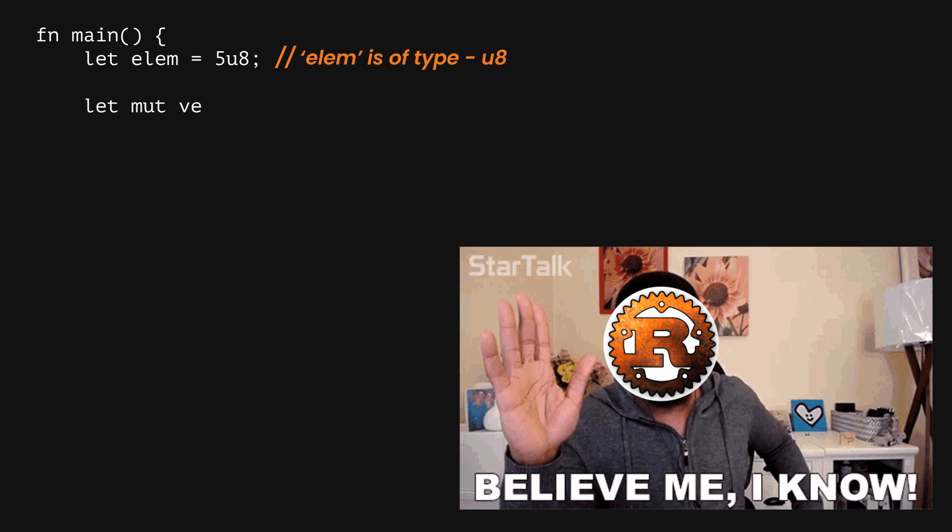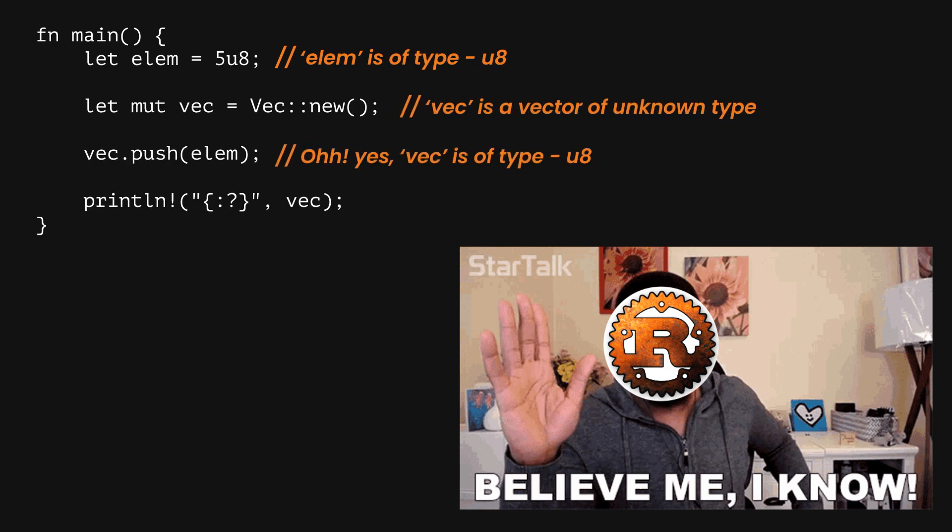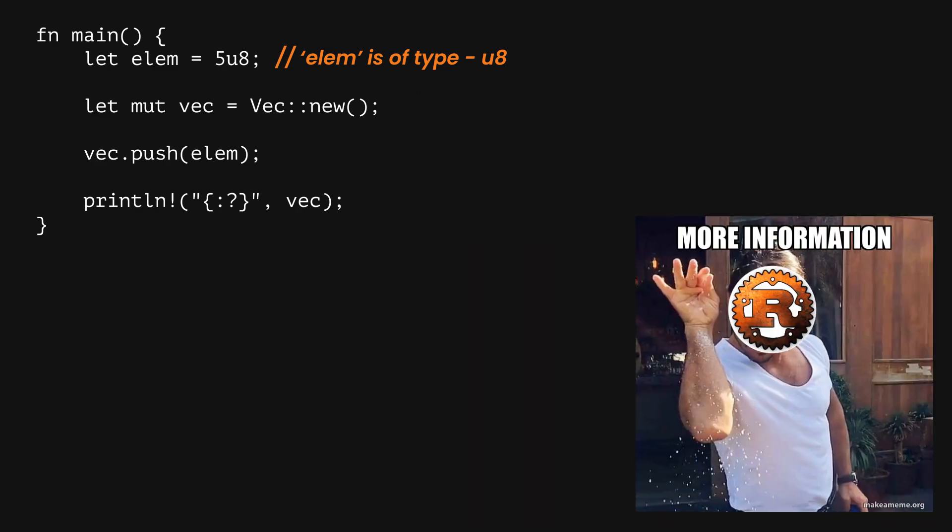Now let's talk about types. Rust has this great type inference system, which is a fancy way of saying Rust usually knows what type you're using without you telling it. But sometimes Rust's like 'I need a bit more info here.'